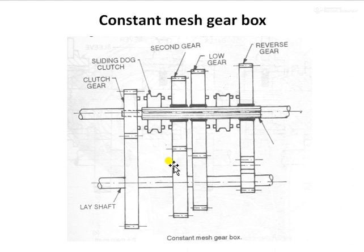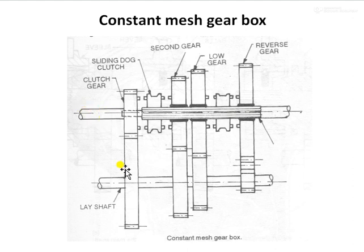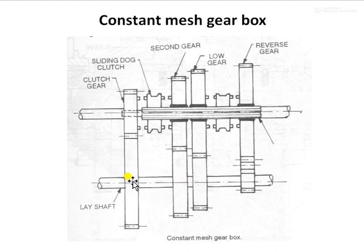This is the front view of a four-wheeler constant mesh gearbox. There are three shafts present: the first is the layshaft, the second is the main shaft, and the third is the clutch shaft. The gears present on the layshaft — gear number one, two, three, and four — are fixed with the shaft, meaning when the layshaft rotates, the gears also rotate.